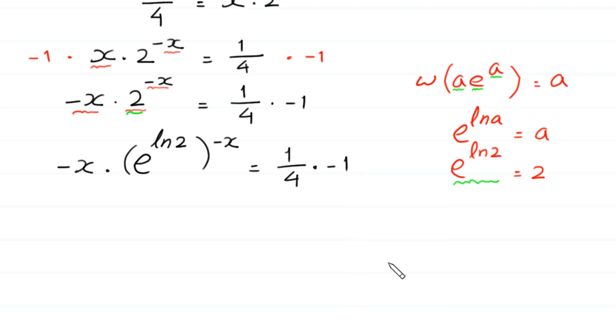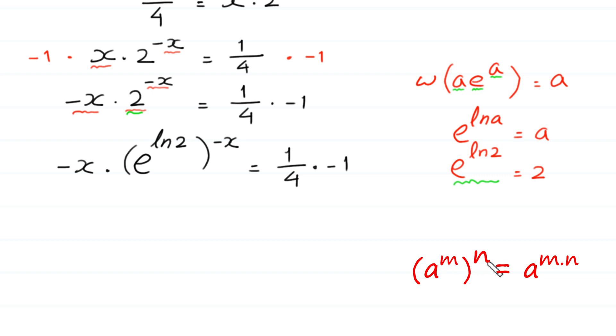According to the property of exponents, a^m whole to the power n equals a^(m times n). So this power ln 2 will be multiplied by the power negative x.